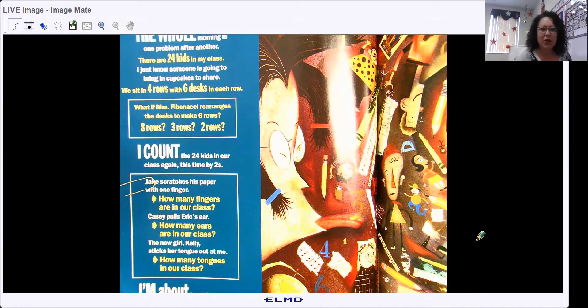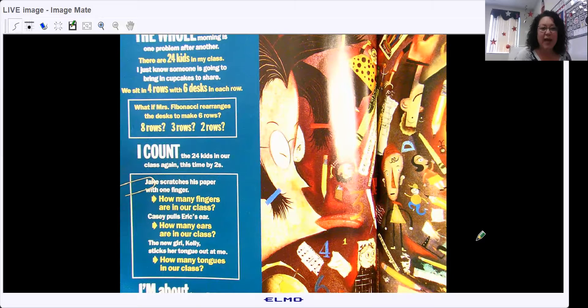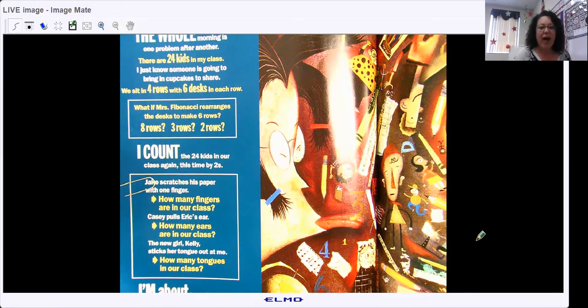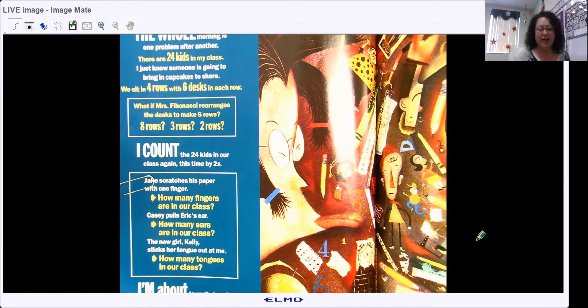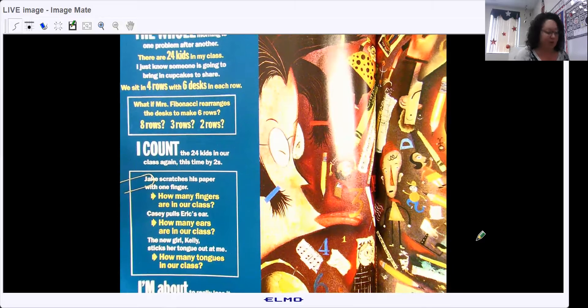What if Mr. Fibonacci rearranges the desks to make six rows? Eight rows? Three rows? Two rows? I count the 24 kids in our class again. This time by twos.